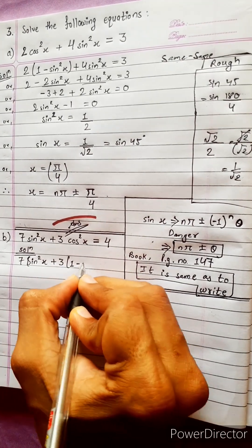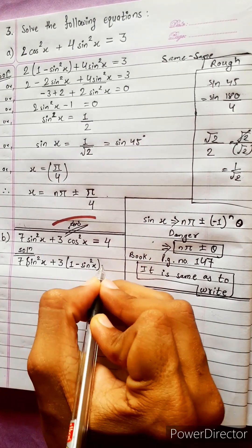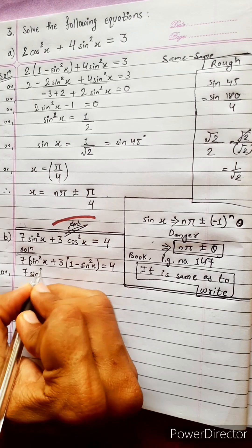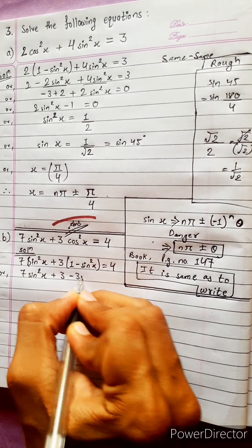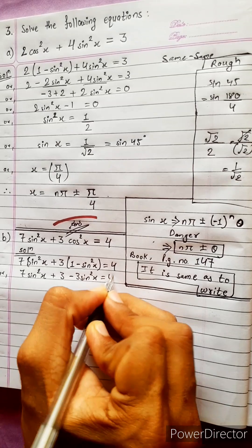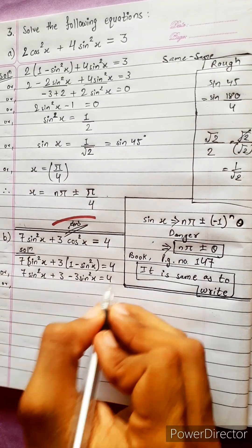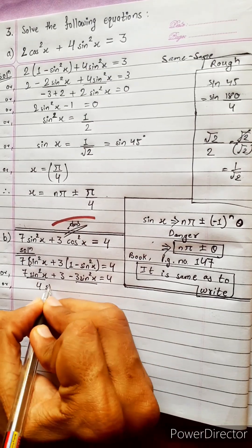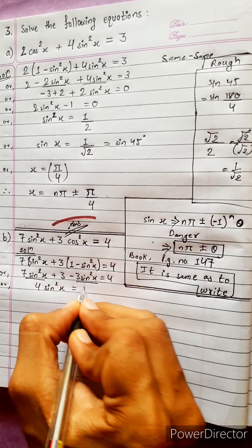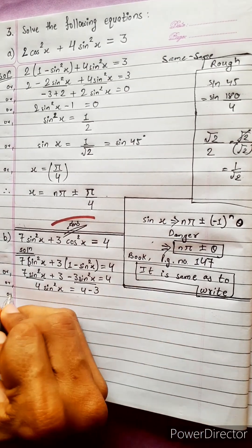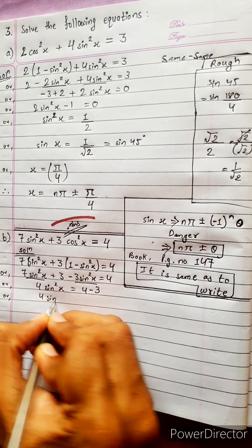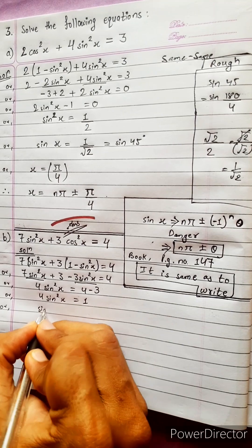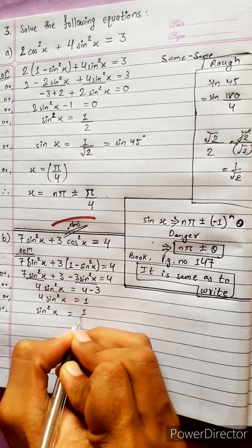For the next equation: 7sin²x plus 3 minus 3sin²x equals 4. Simplifying: 7 minus 3 gives 4sin²x equals 4 minus 3, so sin²x equals 1/4.